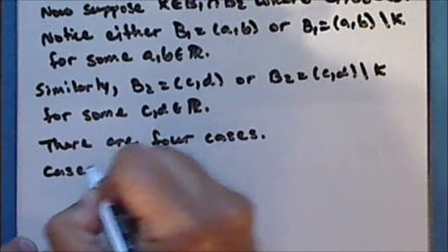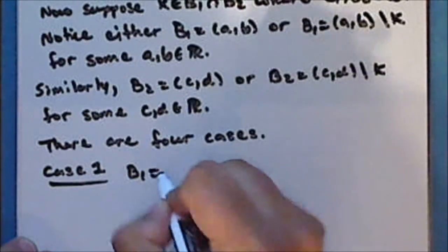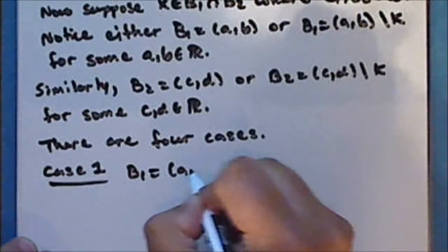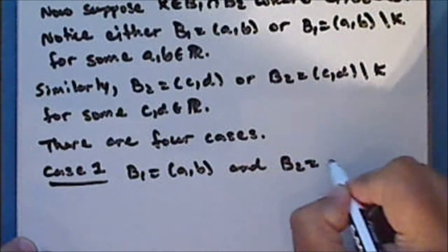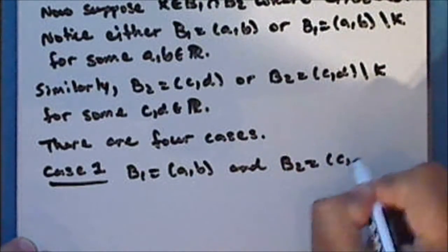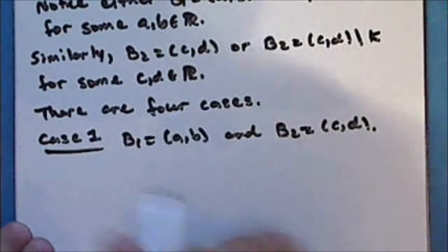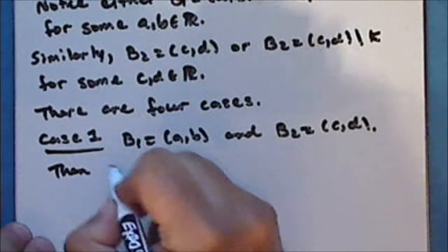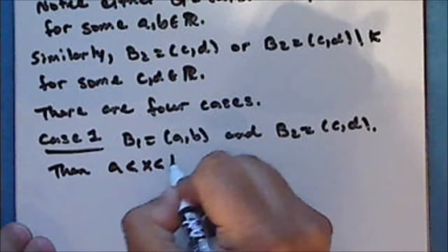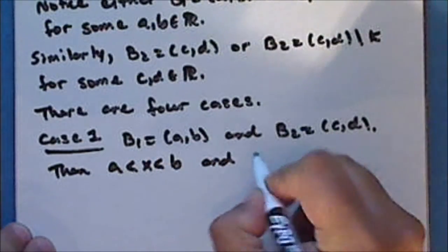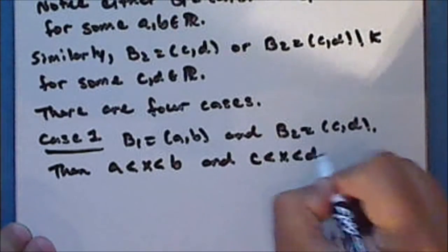Case 1: B sub 1 is the open interval from A to B, and B sub 2 is the open interval from C to D. Then in this case, A is less than X which is less than B, and C is less than X which is less than D.